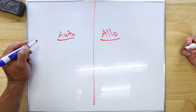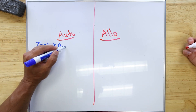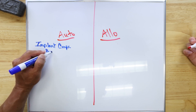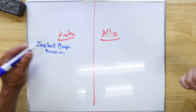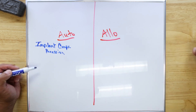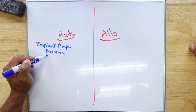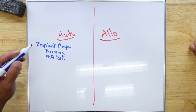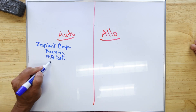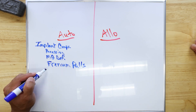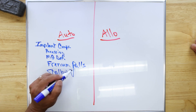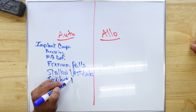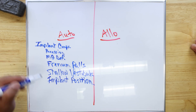So if we're talking implant complications, you're always auto. Always auto. So if we're talking about recession, any mucogingival deficiencies, you're going to go auto. If you have frenum pulls, shallow vestibules, issues with implant position — not major issues to where you've got to take out the implant, but just minor ones — all these types of things are going autograft.